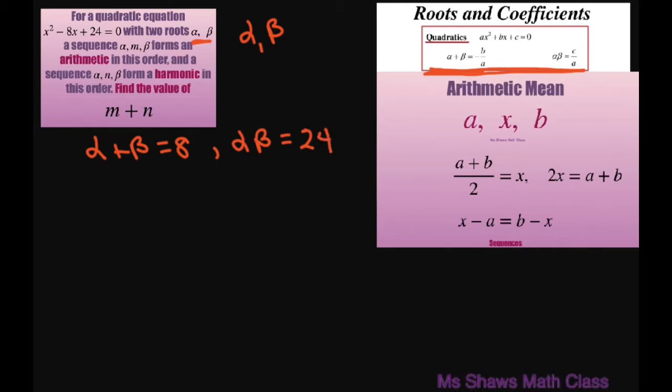Now let's find the arithmetic mean for the sequence that's arithmetic. That means we have alpha, m, beta.